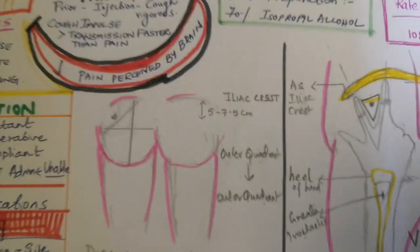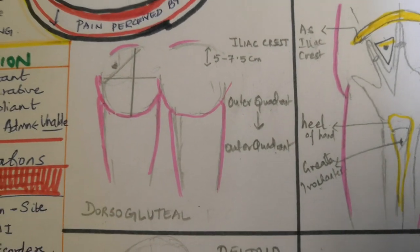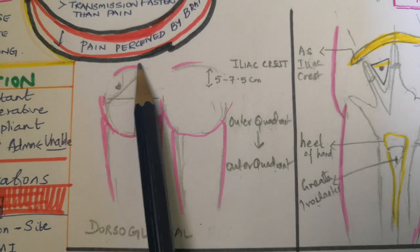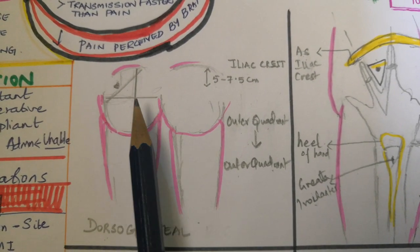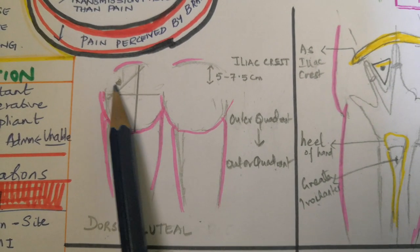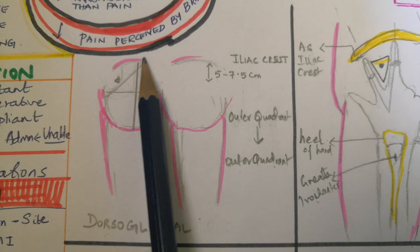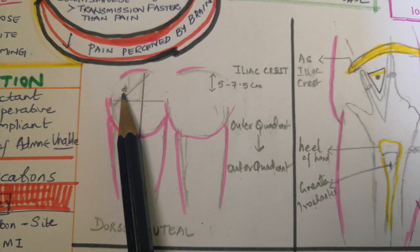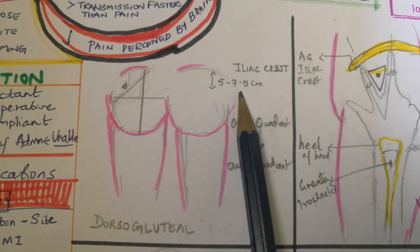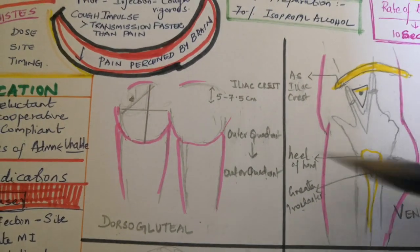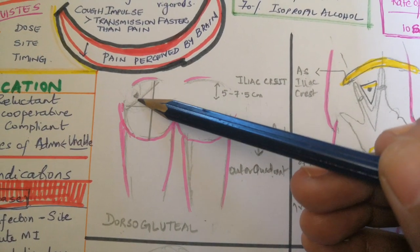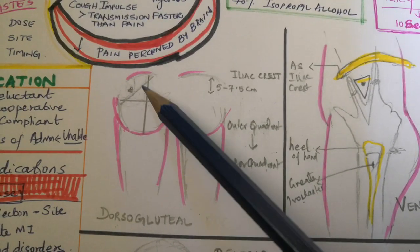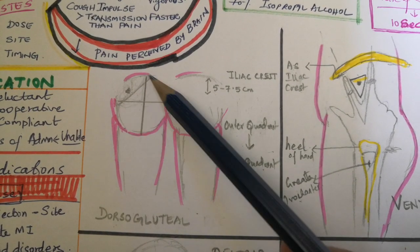Now let's see how to locate these specific sites in detail. For the dorsogluteal region — the buttock area — divide it into 4 quadrants using an imaginary line. Then divide the outer quadrant into another outer and inner quadrant. The site of injection is the outer quadrant of the outer quadrant, and it should be 5 to 7.5 cm below the iliac crest.